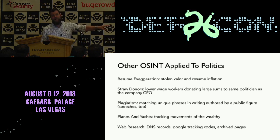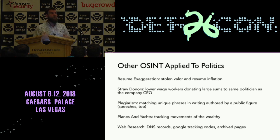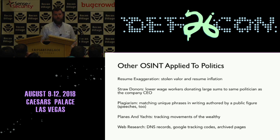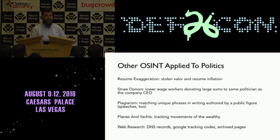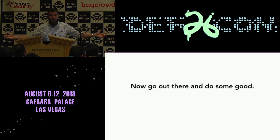Also, looking at archived pages — candidates who have been in public office over a long period of time are going to have a long history of political websites, and what they talk about is going to change over time. A great example: every single Democrat who is in office now who was in office in the nineties has flipped on the issue of marriage equality. They will have statements from the nineties supporting don't ask, don't tell, or opposing any sort of marriage equality — and those statements are all going to be on the archived pages of their websites. Some candidates didn't even change their position until as recently as 2014. All right, so it looks like we're out of time. Thank you guys so much. Please go out there and do some good.